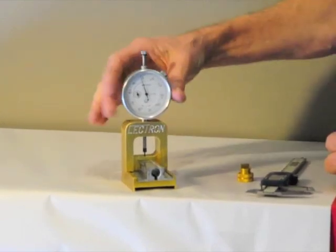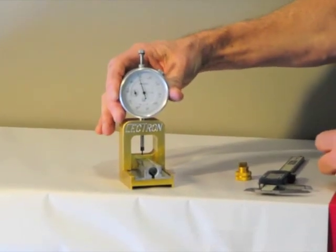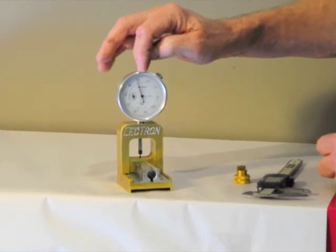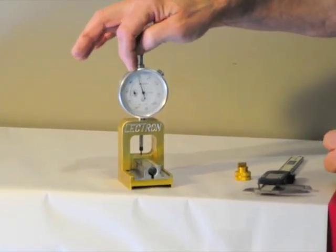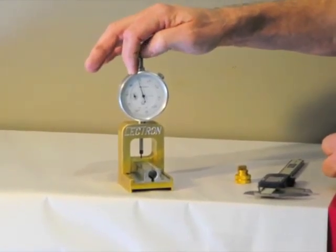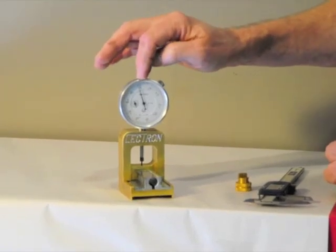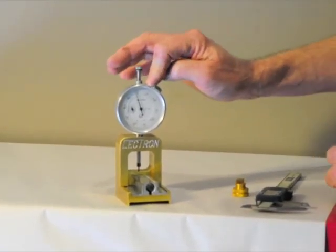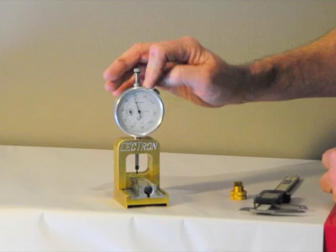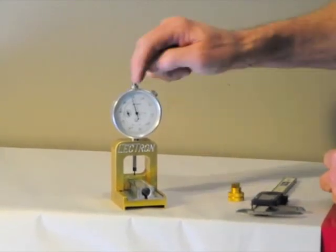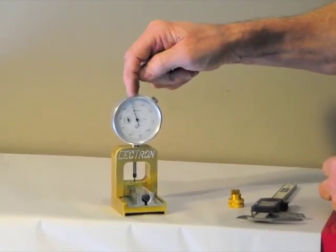Now with the fuel ratio tool, what you're trying to achieve is zero. Anything on the left side of zero indicates the bike's rich. Anything on the right side of zero indicates the bike's lean. So as I look right now, I'm past zero, so I know it's rich.